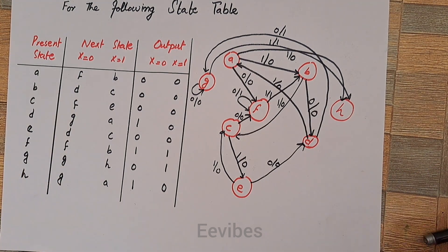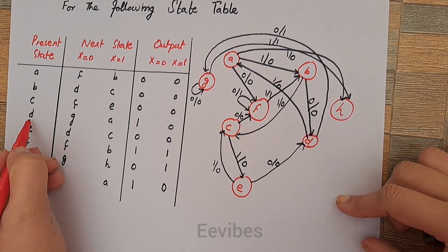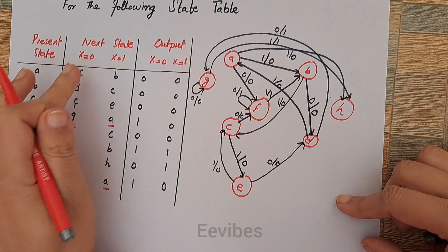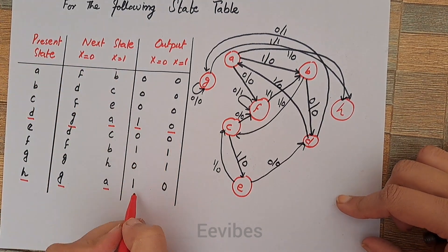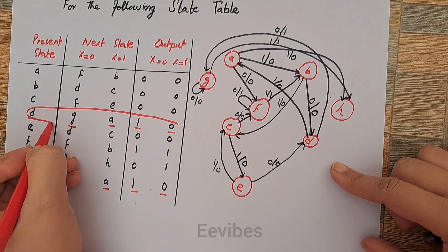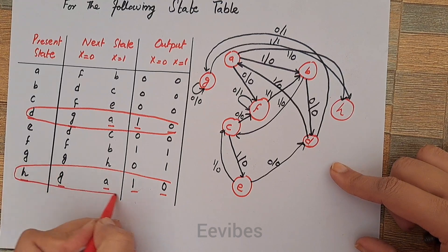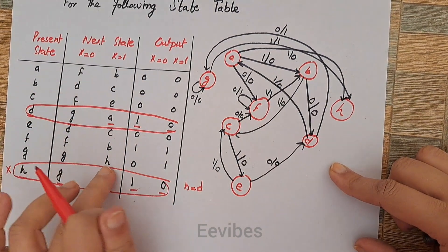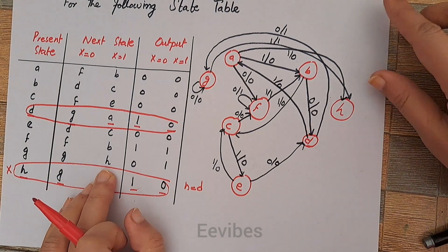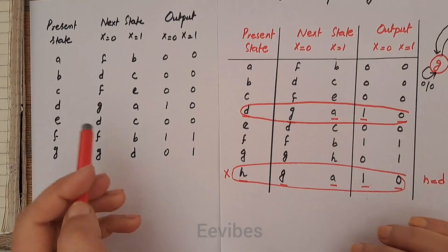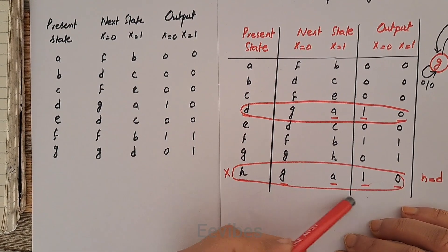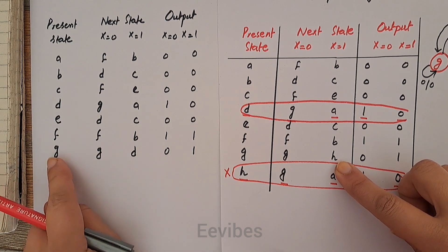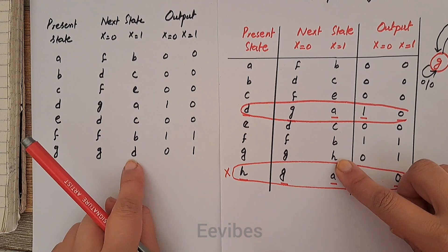Looking closely at the state table, states D and H both go into the same states G and A when inputs are 0 and 1, and produce the same outputs 1 and 0. So D and H are equivalent. I will eliminate the H row from the state table, and wherever H appears I will replace it with D — as can be noticed in the updated next-state entry for present state G.